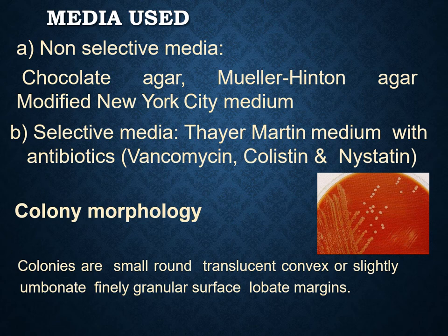The non-selective media used for culturing Neisseria gonorrhoeae are chocolate agar, similar Hinton agar, and the modified New York City medium. For selective media, Thayer-Martin medium with the antibiotics vancomycin, colistin, and nystatin are usually used to culture Neisseria gonorrhoeae. In the selective media, the colonies are small, round, translucent, convex, or slightly umbonate.